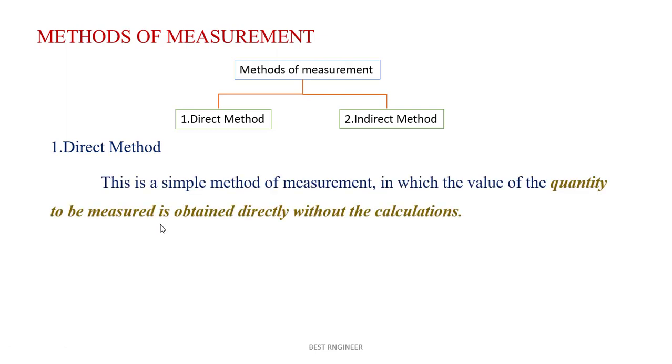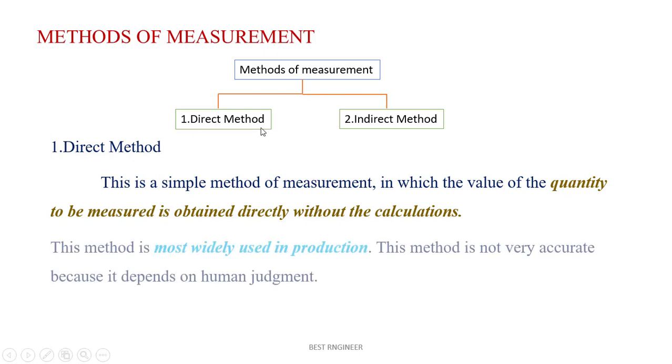Direct method is a simple method of measurement in which value of the quantity to be measured is obtained directly without any calculation. This method most widely used for production. This method is not very accurate because it depends upon human judgment.